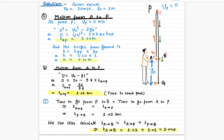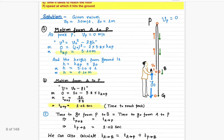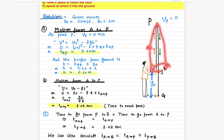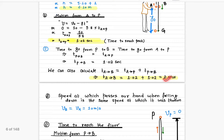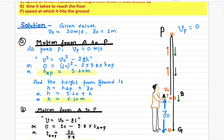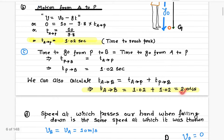The time to come from P to B is exactly the same as from A to P, which is 1.02 seconds. So the total time from A to B — up and back to hand level — is 1.02 + 1.02 = 2.04 seconds.